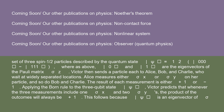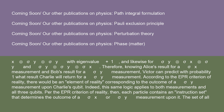Applying the Born rule to the three-qubit state ψ, Victor predicts that whenever the three measurements include one σx and two σys, the product of the outcomes will always be plus one. This follows because ψ is an eigenvector of σx⊗σy⊗σy and likewise for σy⊗σx⊗σy and σy⊗σy⊗σx. Therefore, knowing Alice's result for a σx measurement and Bob's result for a σy measurement, Victor can predict with probability one what result Charlie will return for a σy measurement. According to the EPR criterion of reality, there would be an element of reality corresponding to the outcome of a σy measurement upon Charlie's qubit, and this same logic applies to both measurements on all three qubits.